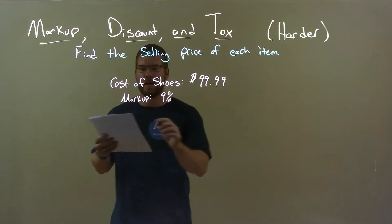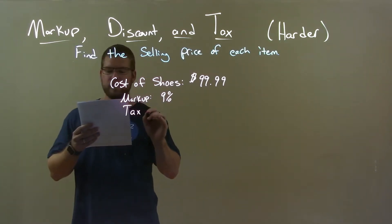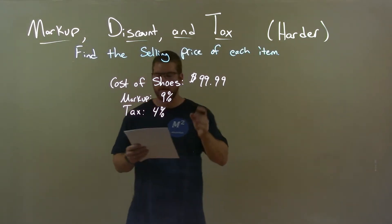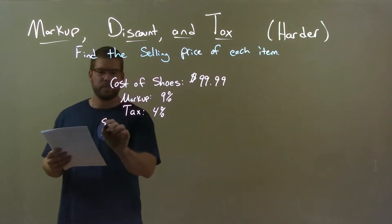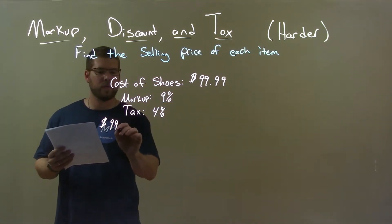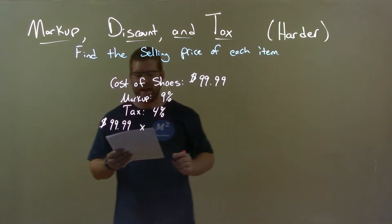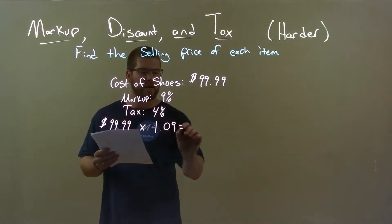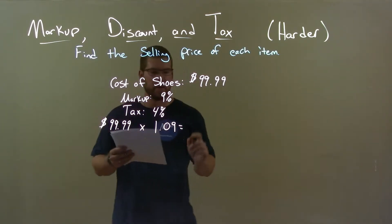Tax is 4%. Start with the cost of shoes, $99.99. These shoes have a 9% markup, so we multiply by 1.09, which represents the 9% markup. This gives us a price after markup of $108.99.